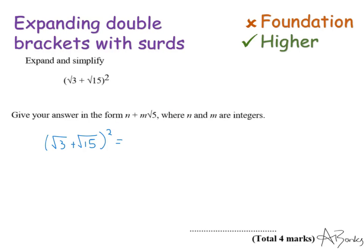Here's a second example, and this time we have (√3 + √15)². Now the biggest mistake I see students make here is that they will do root three squared and root fifteen squared and add their answers together. This is a common mistake students make with algebra as well. This doesn't mean that we square the root three and square the root fifteen.